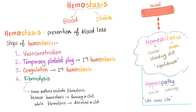Back to hemostasis. Hemostasis means blood clotting to stop bleeding and preserve the blood — prevention of blood loss. Steps of hemostasis: first, if you cut the vessel, vasoconstrict to decrease surface area so you lose less blood.